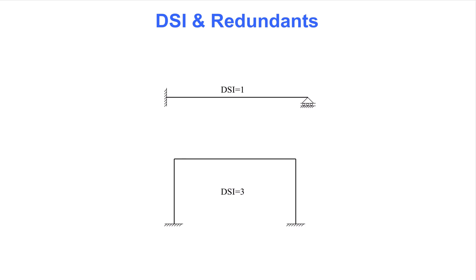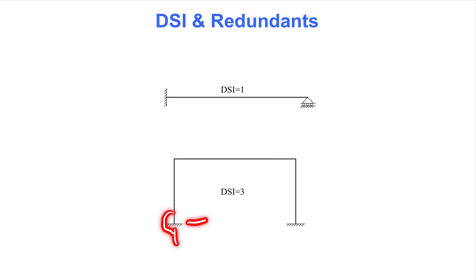For the beam shown on this slide, we can select the reaction force on the right-hand side as the redundant. However, it is also fine to select the bending moment at the support on the left-hand side. Similarly, for the frame below, we could select the three reaction forces on the left-hand side, or the right-hand side, or any other combination of three forces. This lack of a unique answer is why the flexibility method is not well suited for computer analysis, as the input would be subjective and different for different structures.